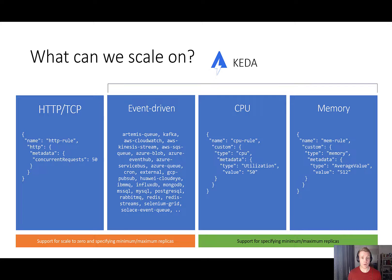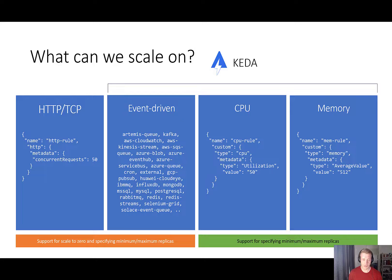Azure Container Apps supports the following scale triggers. We can scale on HTTP and TCP traffic, which will scale our Container App based on the number of concurrent HTTP or TCP requests to our Container App revision. We can also scale on event-driven triggers. This capability is supported by KEDA, and any event that's supported by KEDA is supported in Azure Container Apps. Depending on the type of event that we want to scale on, we'll need to configure it as we would in KEDA, so make sure you configure your event-driven trigger in the proper way that KEDA would expect.